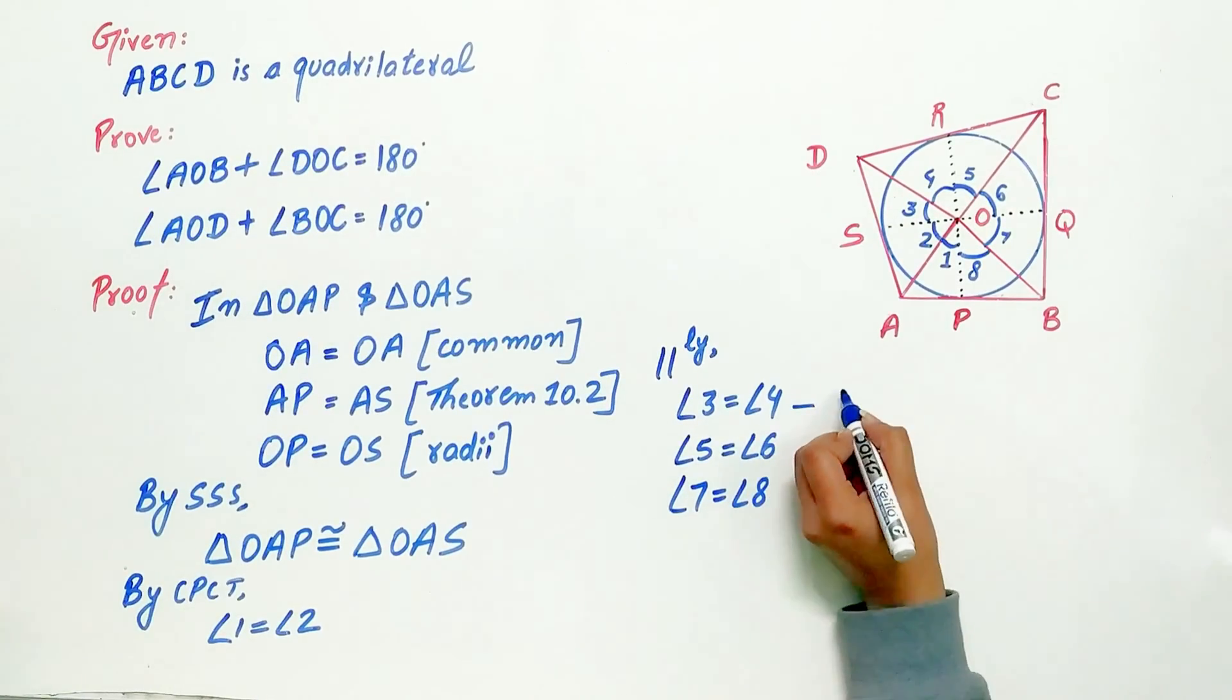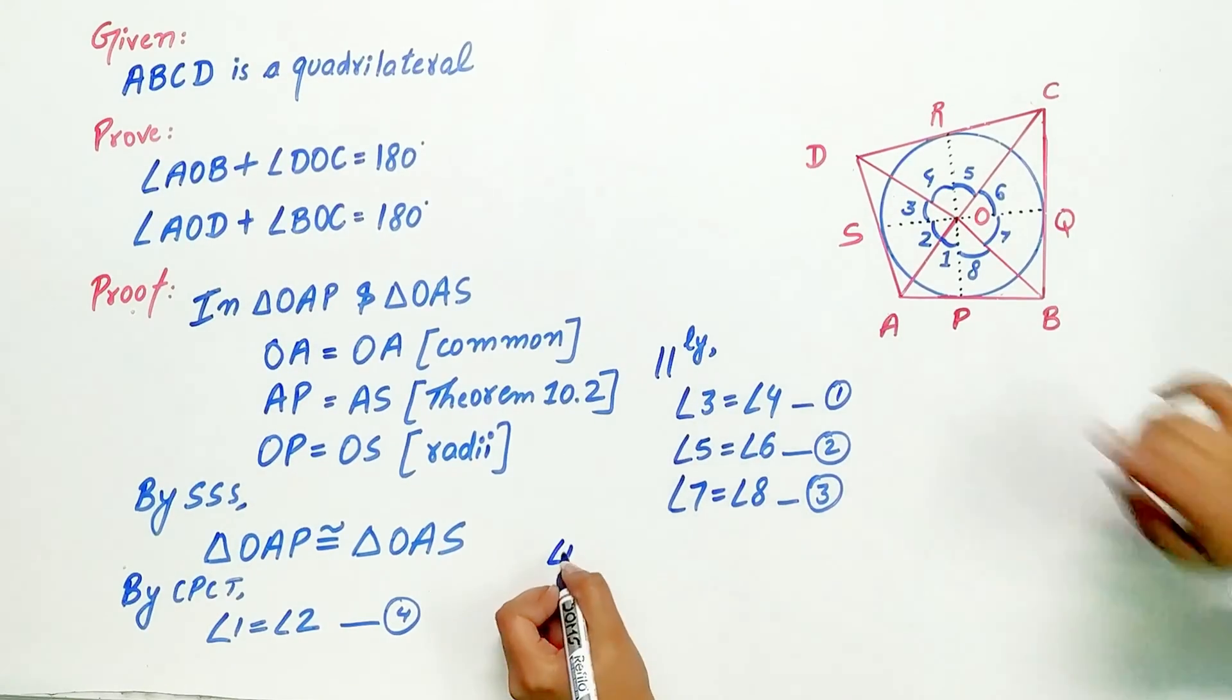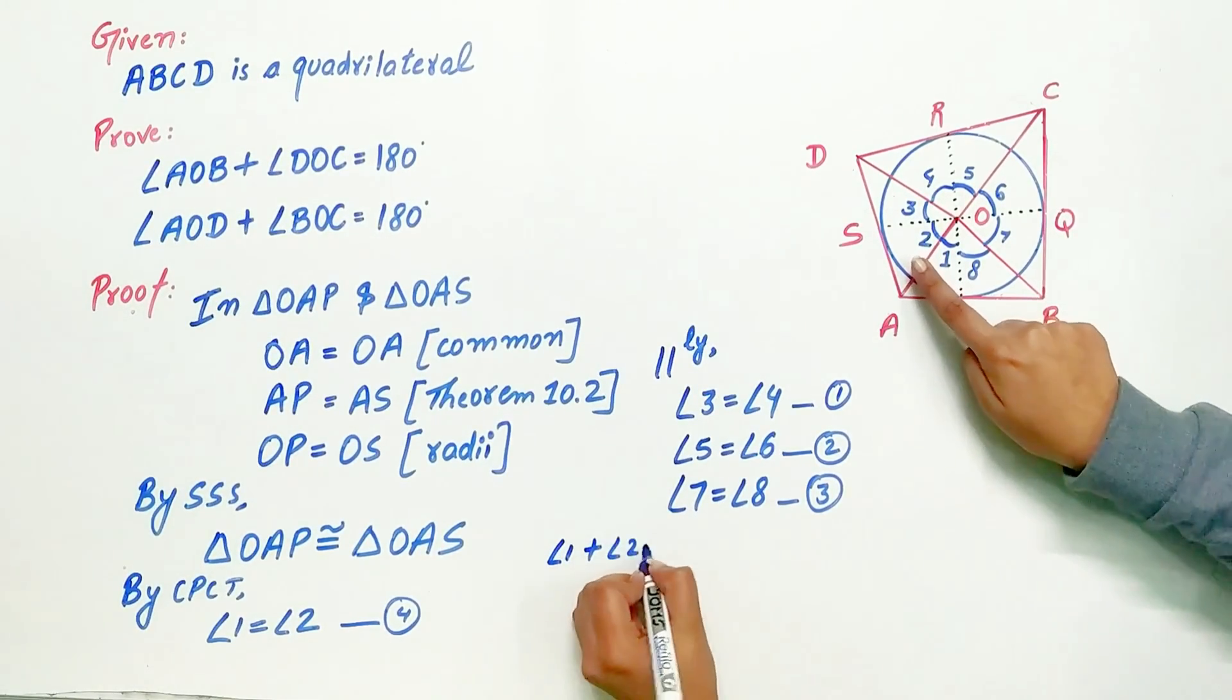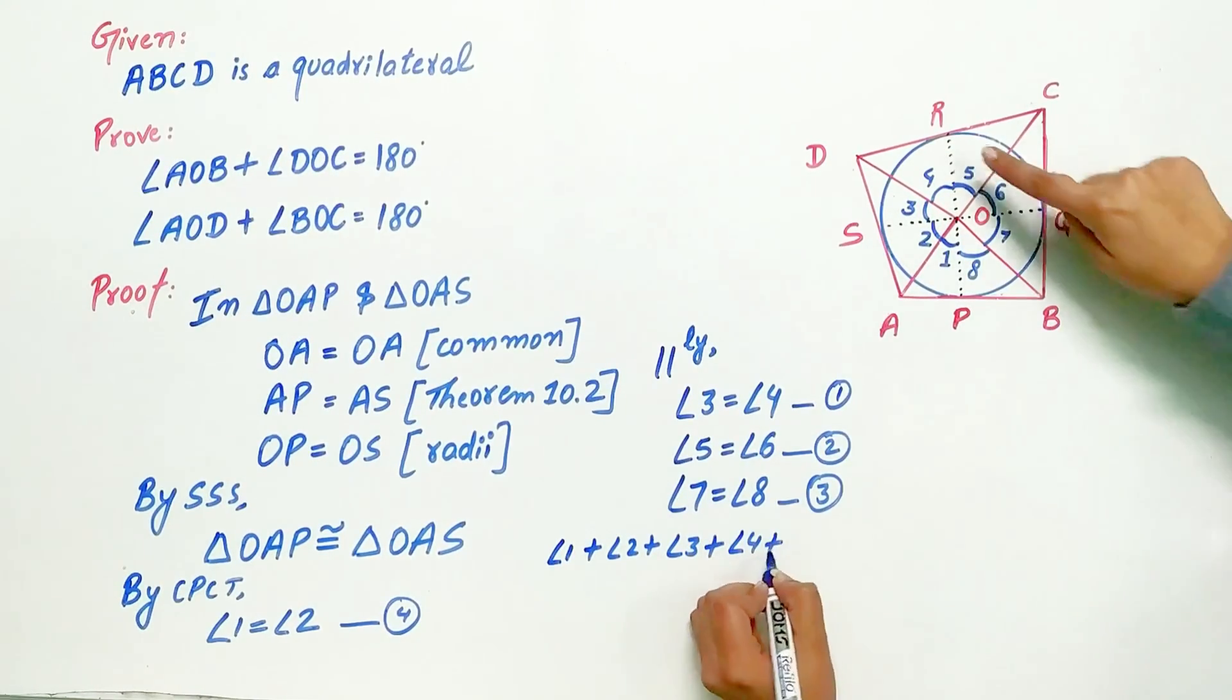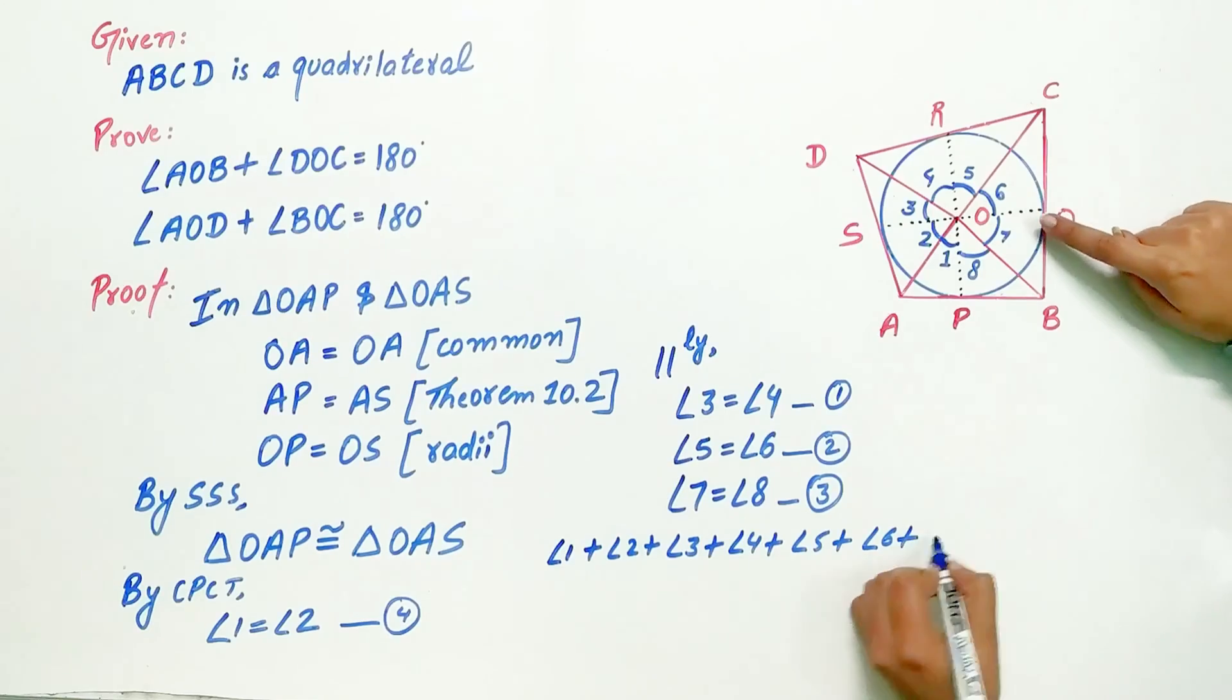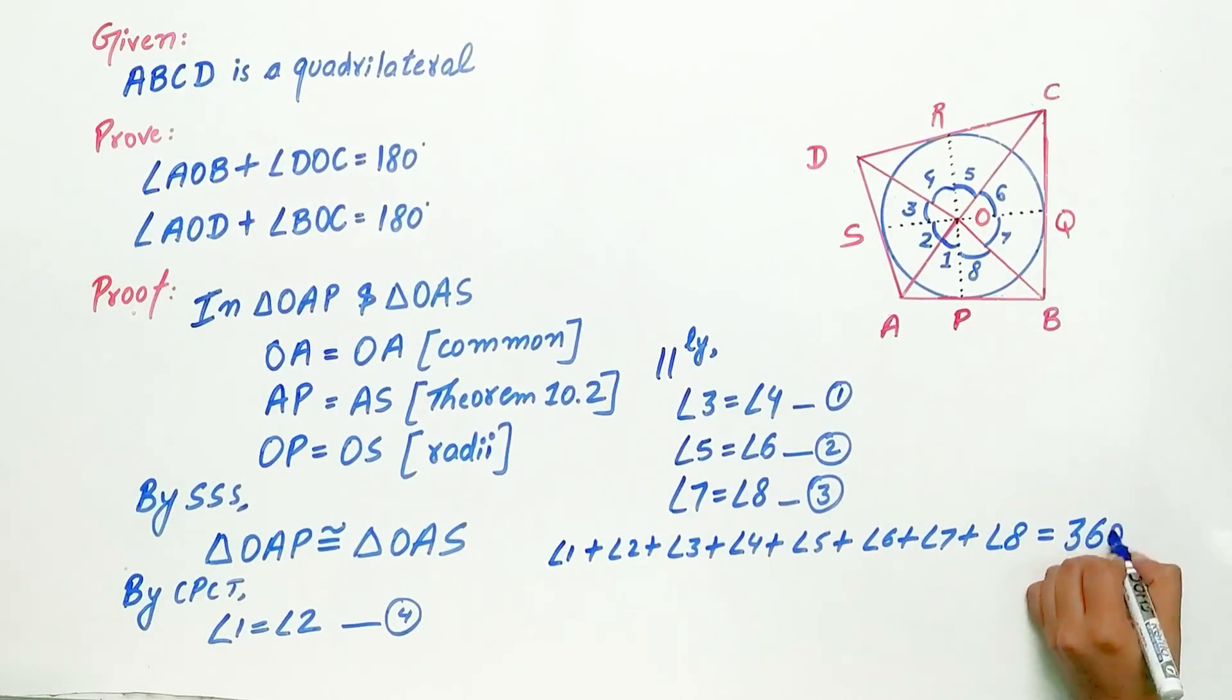Let's mark them as 1, 2, and 3. Now look carefully. The sum of all these angles equals 360 degrees. Angle 1 plus angle 2 plus angle 3 plus angle 4 plus angle 5 plus angle 6 plus angle 7 plus angle 8 equals 360 degrees.